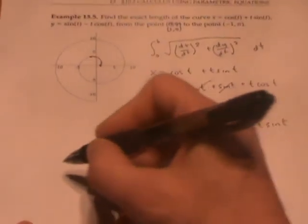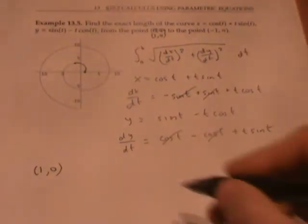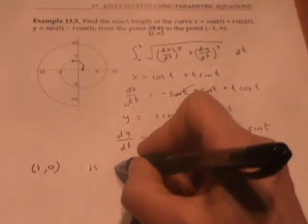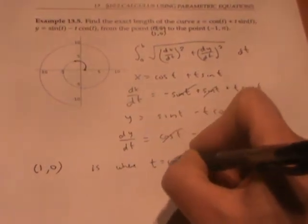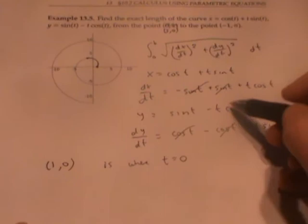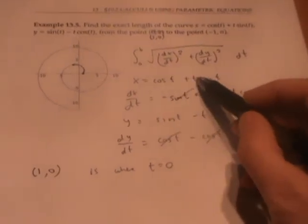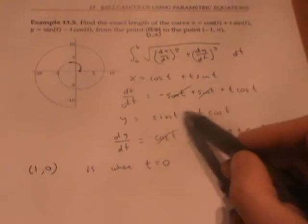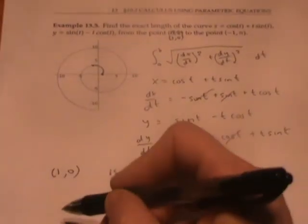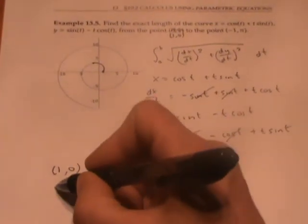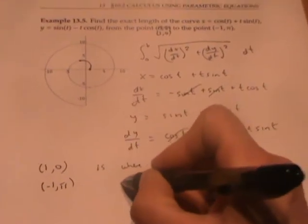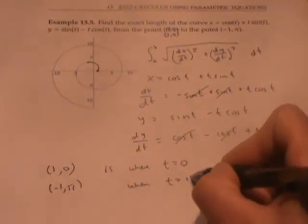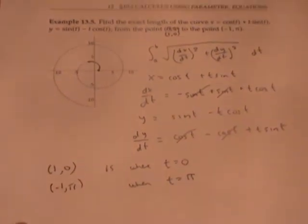To get to the starting point (1, 0), t is 0. Plugging into the equations of x and y, you can see that when you plug in time 0, this drops out, this goes to 1, and over here everything drops out. You can check that you get to the point (-1, π) when t equals π by plugging in.